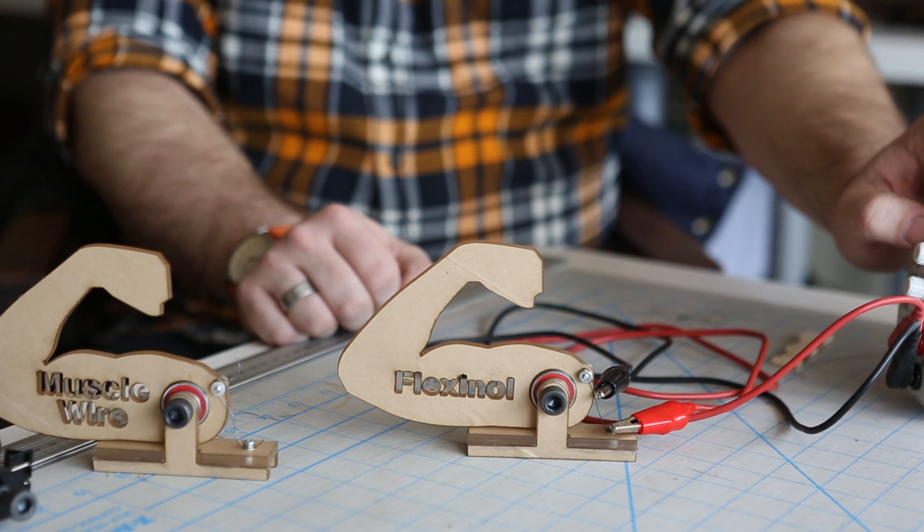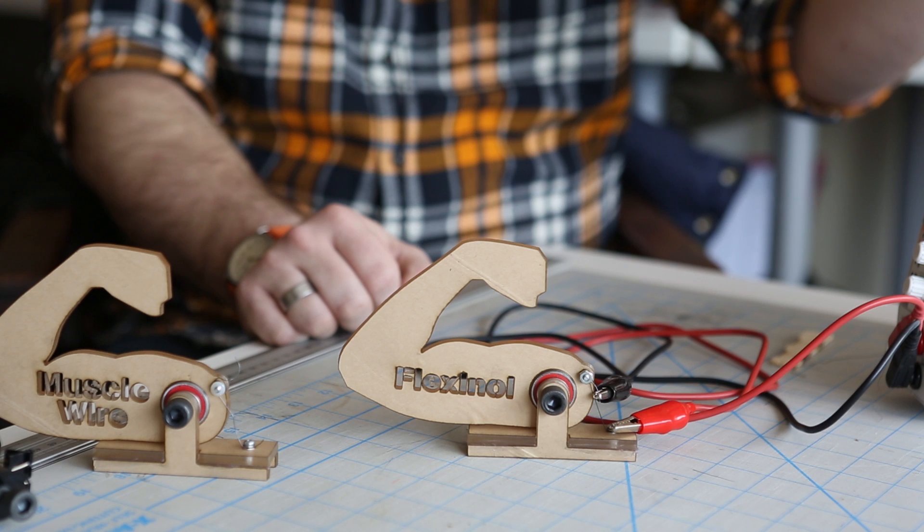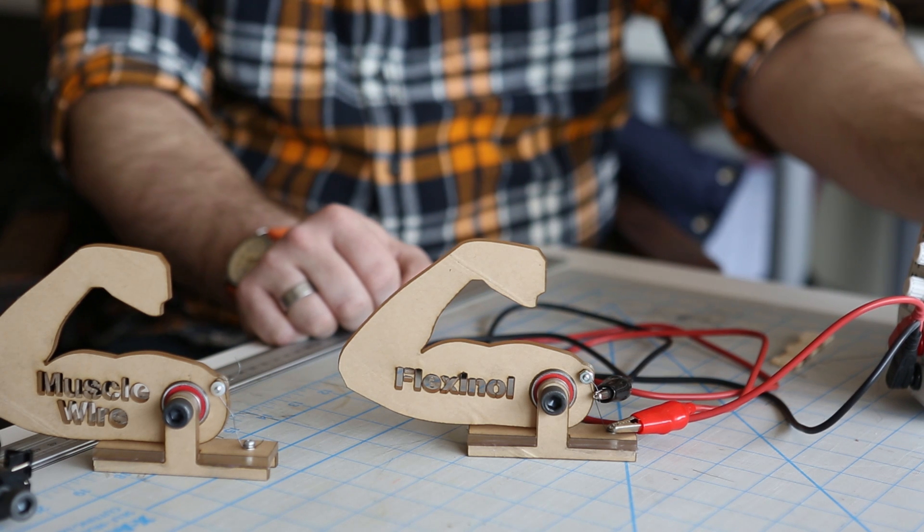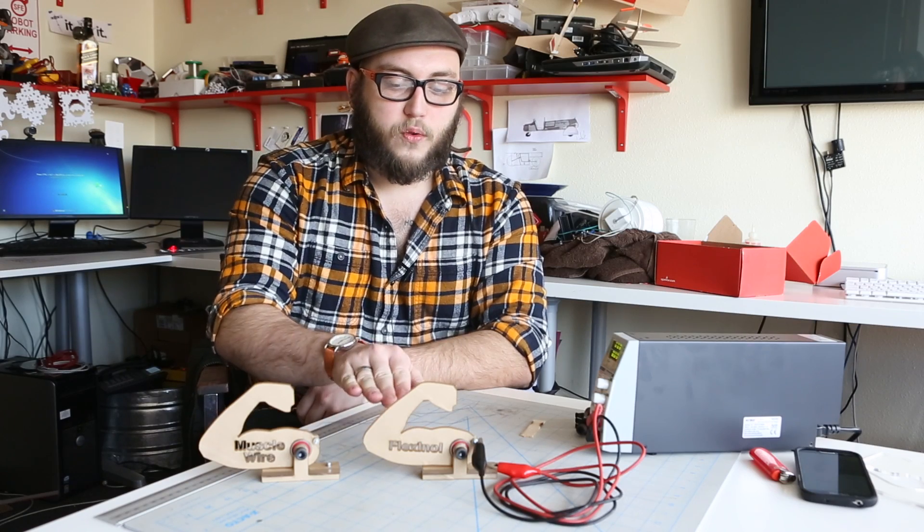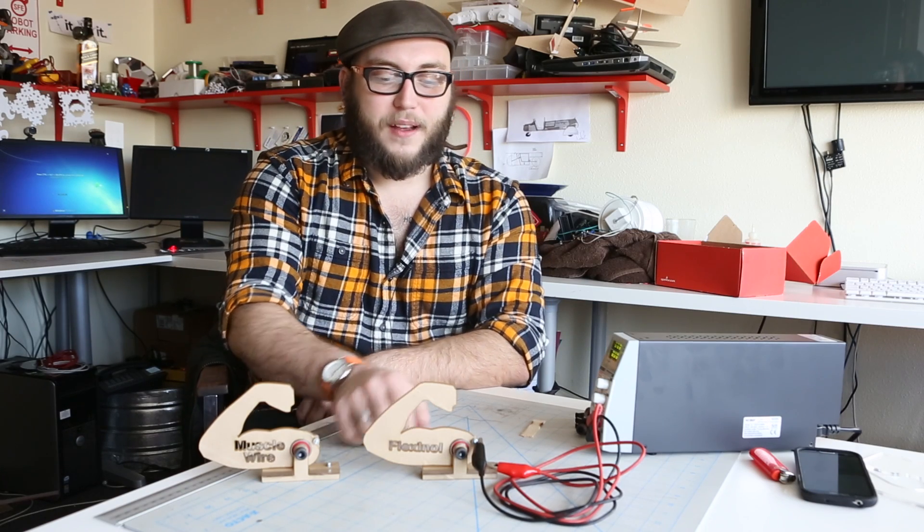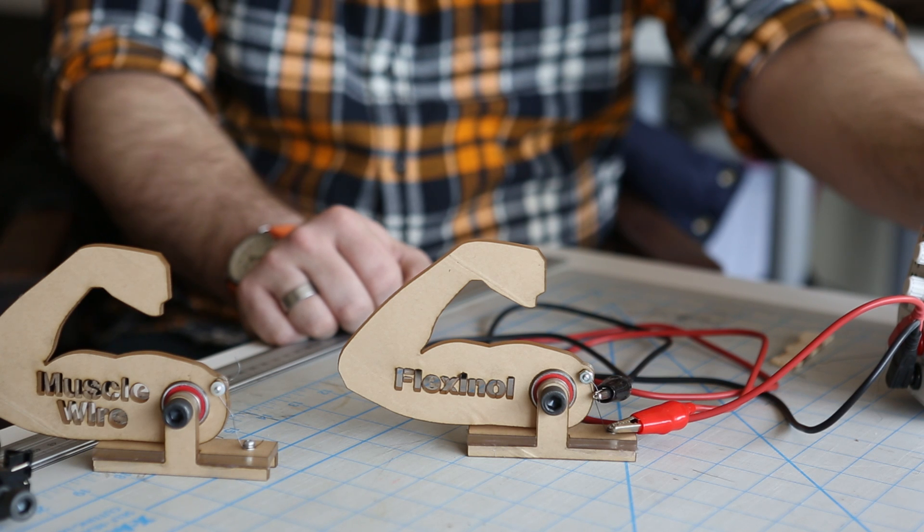Here I've connected the flexinol up to our bench supply and you can see we got a little bit of deflection there. It picked up the lever and it did it pretty quickly but it wasn't as much action as you got with the muscle wire. And again it has to cool down before it'll drop the lever back down. And because this actuates at a slightly higher temperature it takes it a little longer to cool down.